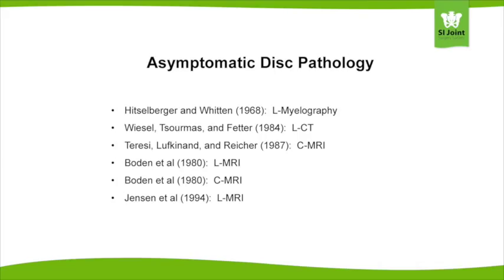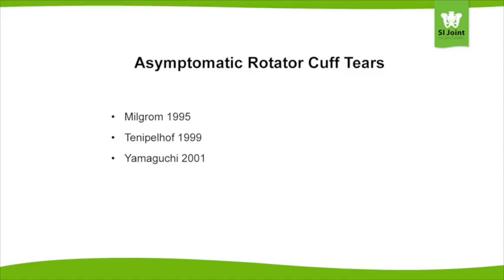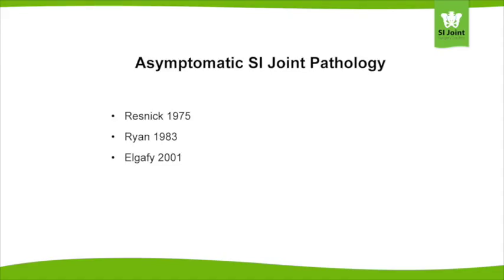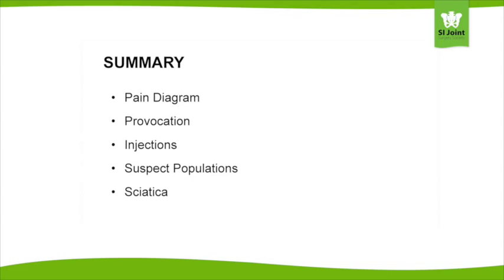A reminder: a structurally abnormal disc, a structurally abnormal rotator cuff, a structurally abnormal meniscus, and yes, a structurally abnormal SIJ on CT or MRI doesn't even tell us if the patient is alive or dead — let alone what's causing their symptoms. In summary, image-guided injections should simply be an extension of a careful history and physical. Consider contributing factors: spondyloarthropathies, muscle imbalance, congenital anomalies. And finally, don't forget the SIJ is a putative cause of sciatica. Thank you very much.